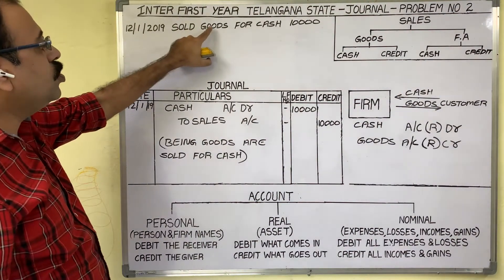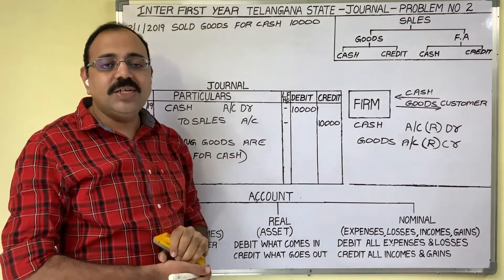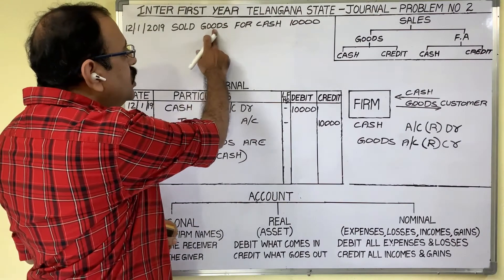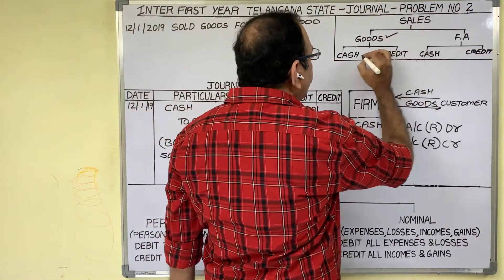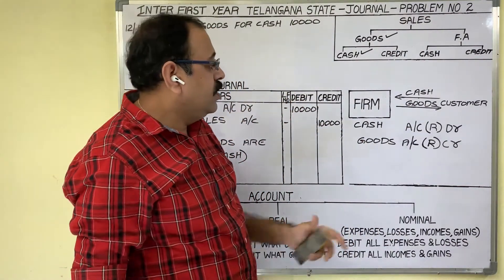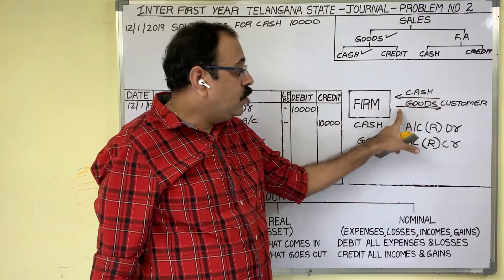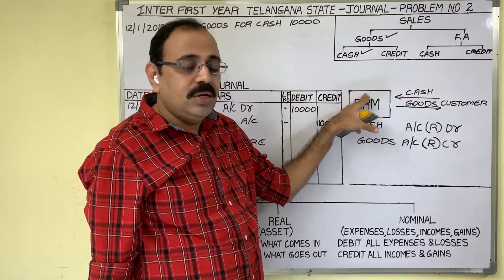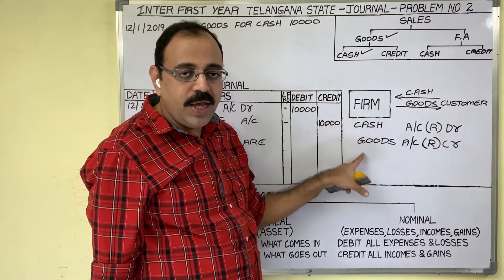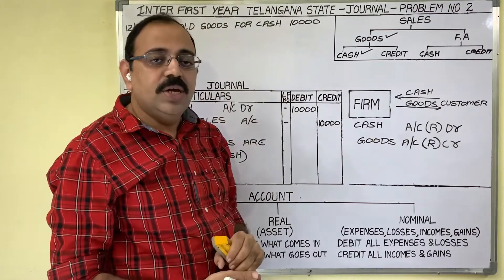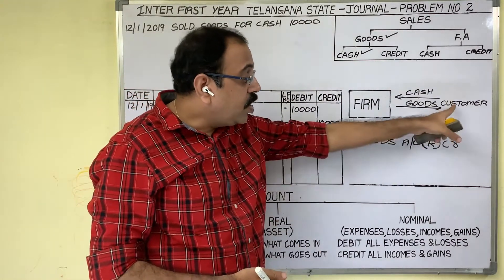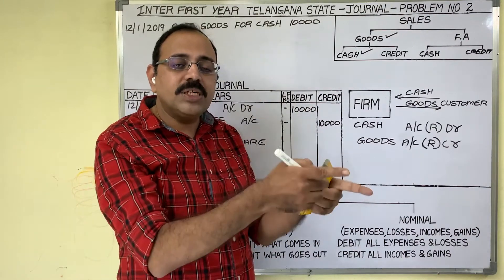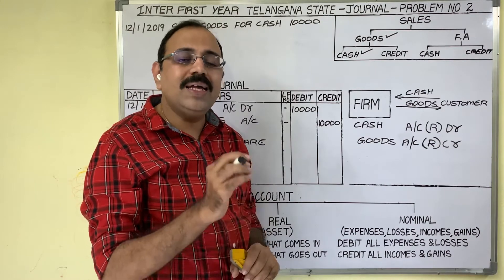The 12th day transaction is: sold goods for cash, 10,000 rupees. This is a sales transaction. The firm sold goods to a customer for cash — goods are going from the firm, customer paid cash to us. Cash is coming, goods are going. Customer's name is not given in this question. Even though the customer's name is given, we need not consider that because it is a cash sale — we already received cash from the customer. Customer's name is immaterial to us; we need not record his name in our books.